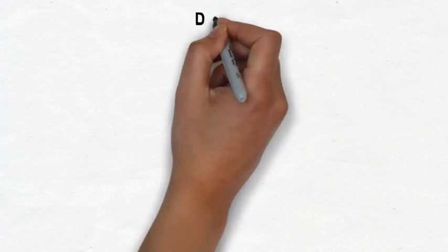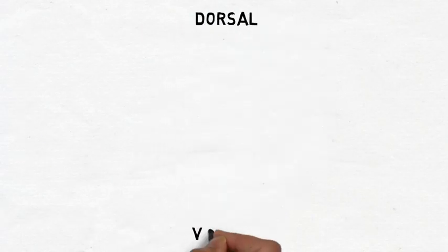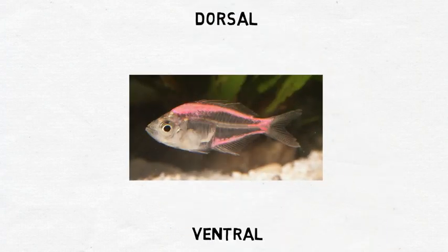There are also some terms, however, like dorsal and ventral that change their meaning depending on whether we are referring to the brain or the spinal cord. When used for animals that move through the world horizontally, dorsal refers to the back and ventral refers to the abdominal region.